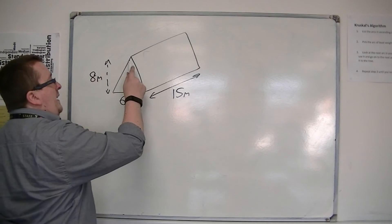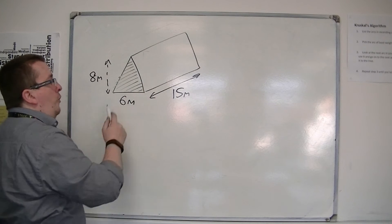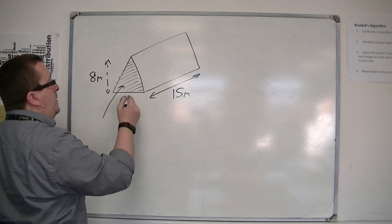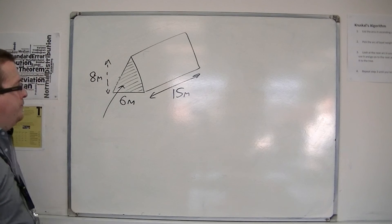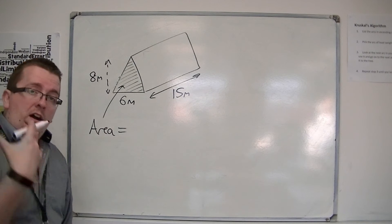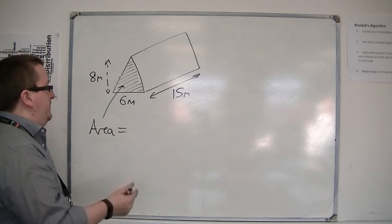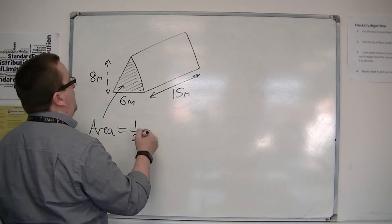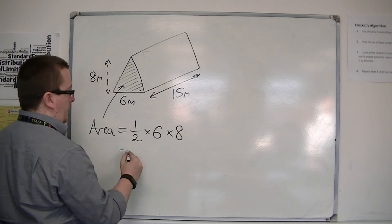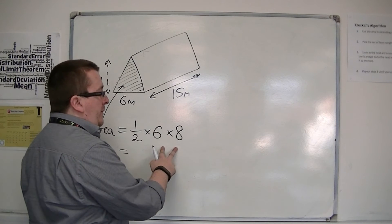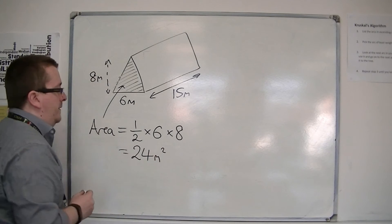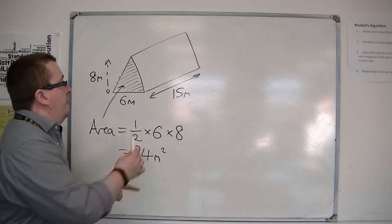...then what I need to do is work out the area of the front face, the area of the triangle, and then multiply that by the depth of the shape. The area of the triangle, if you can remember, is half the base times the height. So half of 6 times 8, 48, so 24 metres squared. That is the area of the triangle.